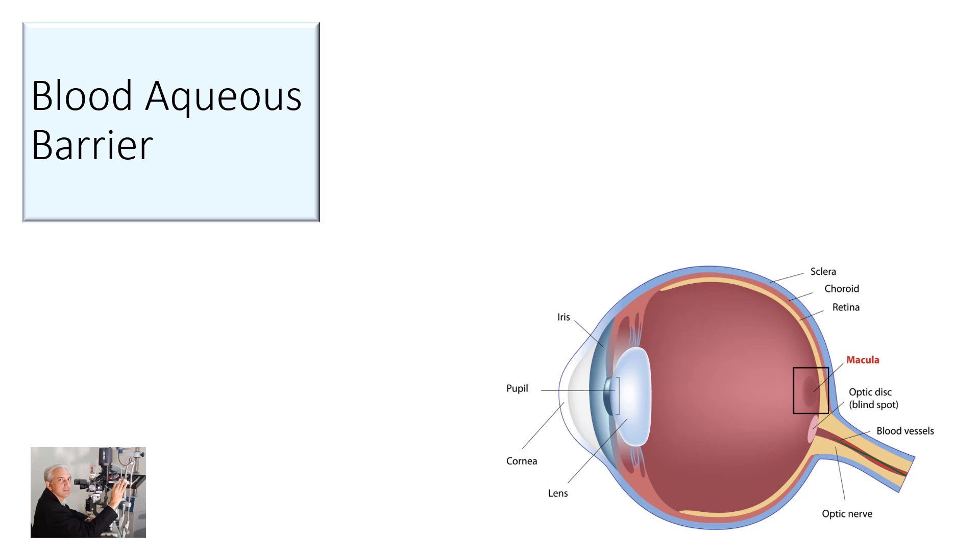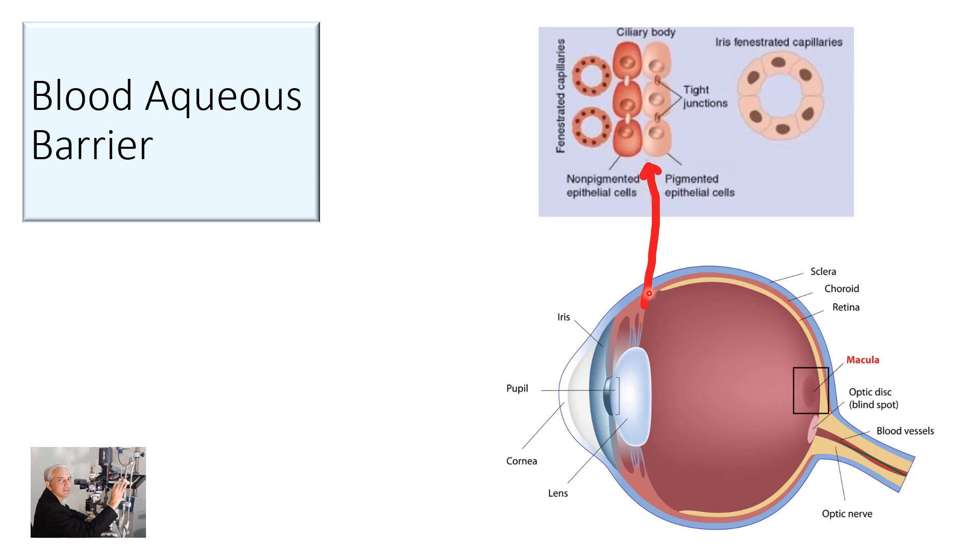Let's look at what the blood aqueous barrier is. Focus on this area of the eye which is the ciliary body. You can see this is the area which is the pars plicata and the area at the back which joins the retina is the pars plana. If we take a closer look at the structure of the pars plicata, there are fenestrated capillaries and the ciliary body with non-pigmented epithelial cells and pigmented epithelial cells.